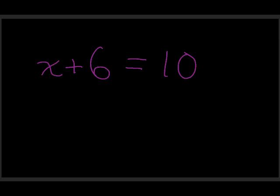Right now you're probably thinking this is simple — clearly x has to equal 4 for 4 plus 6 to equal 10. And that's true, but what we want to do today is start to move out of the mind frame of 'what plus 6 equals 10' and start thinking about this slightly more algebraically, which involves doing things to both sides in order to solve for the variable.